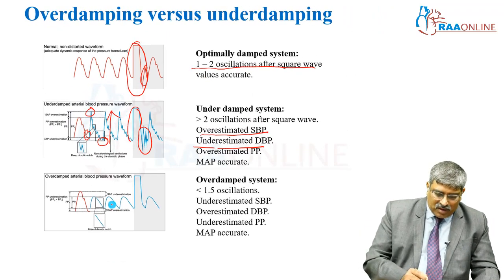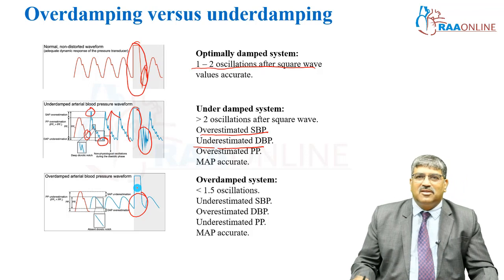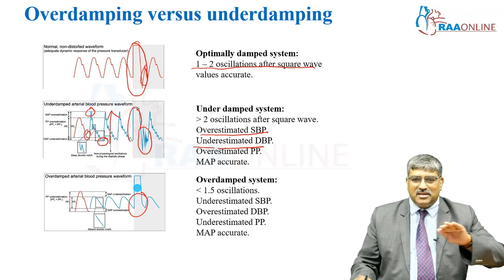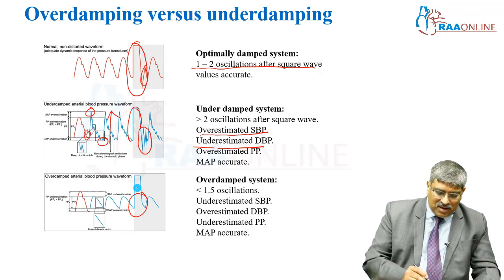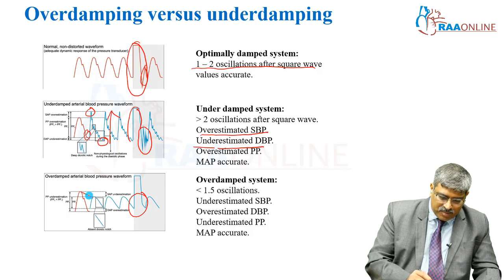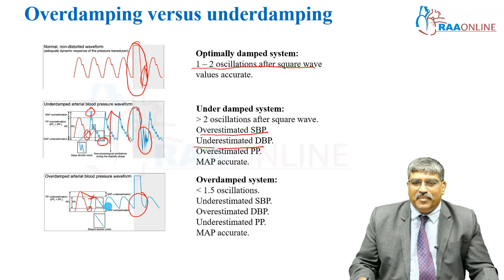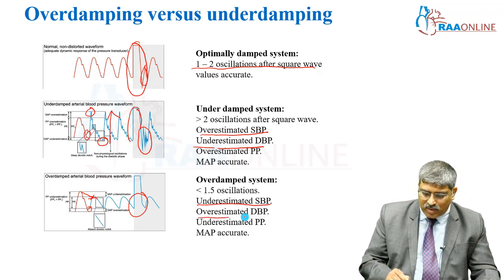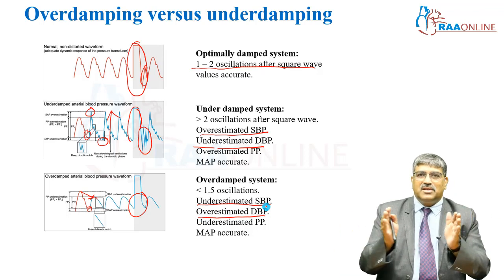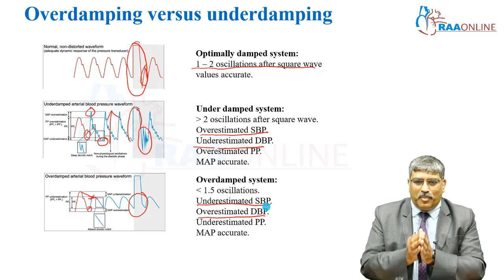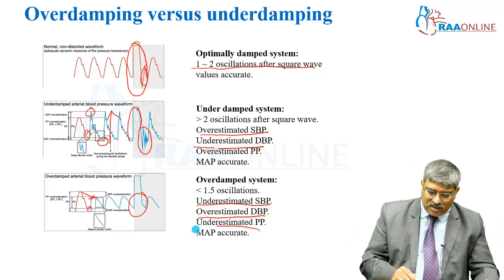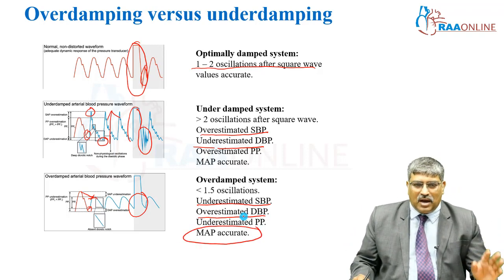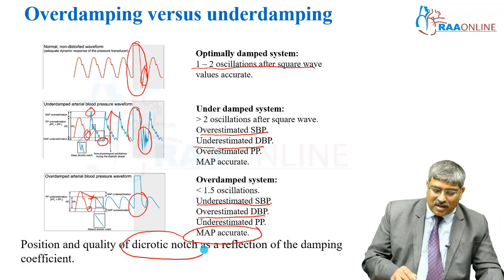Coming to over-damping: when you do the square wave test, there is not much oscillation — less than 1.5 oscillations. Compared to the normal trace, the systolic pressure is low and the diastolic blood pressure is high. So it underestimates systolic blood pressure, overestimates diastolic blood pressure, and underestimates pulse pressure. Mean arterial pressure, however, remains accurate.